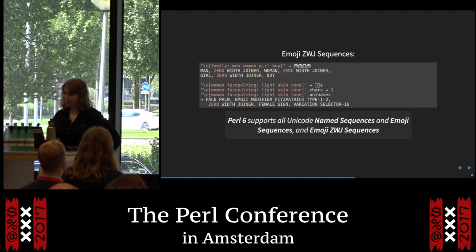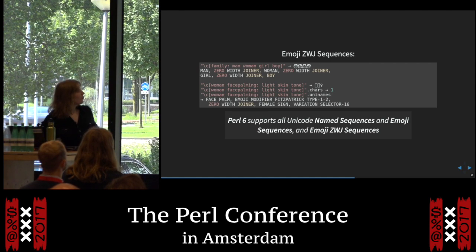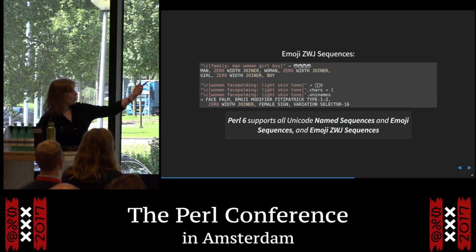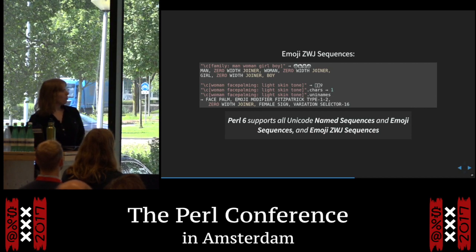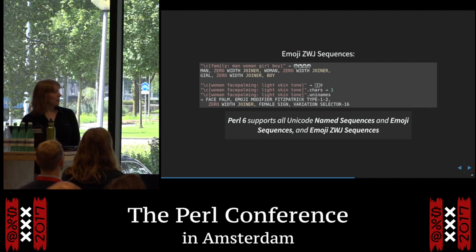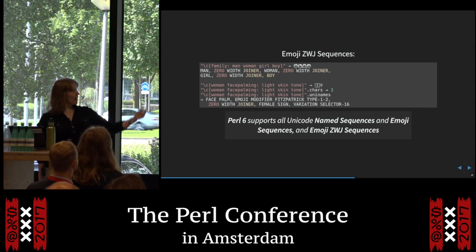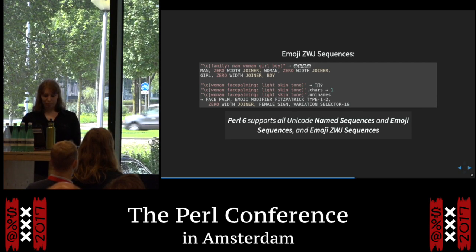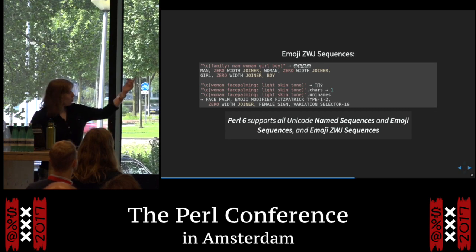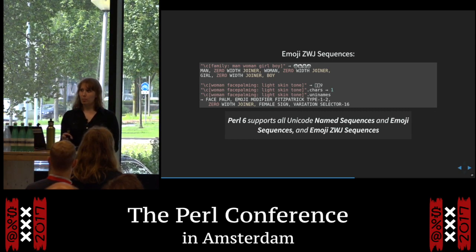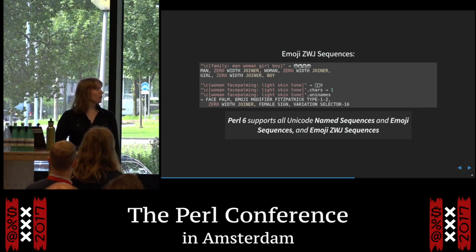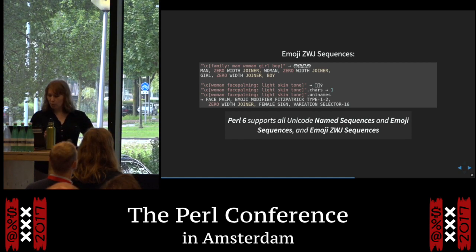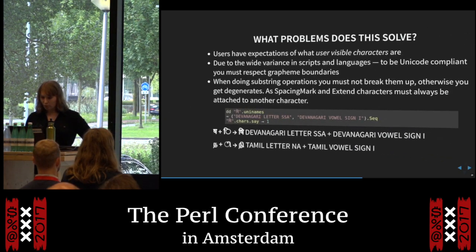For emoji sequences, even though a family emoji renders as one icon, Perl 6 detects it as a single character or grapheme. We can get it from the name, even though it's a sequence, and treat it as what it looks like on screen — because you don't want to accidentally split an emoji apart. Full support for all name sequences and name aliases is in place.